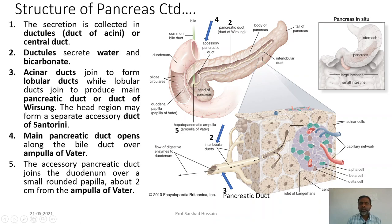The secretion of the alveoli is collected in the central duct. It is then supplied to the ductules present behind this duct, where water and bicarbonate are added to the secretion from the acini. These ductules then unite to form a tube called the lobular duct — one duct coming from each lobule. These lobular ducts collectively open into the pancreatic duct.